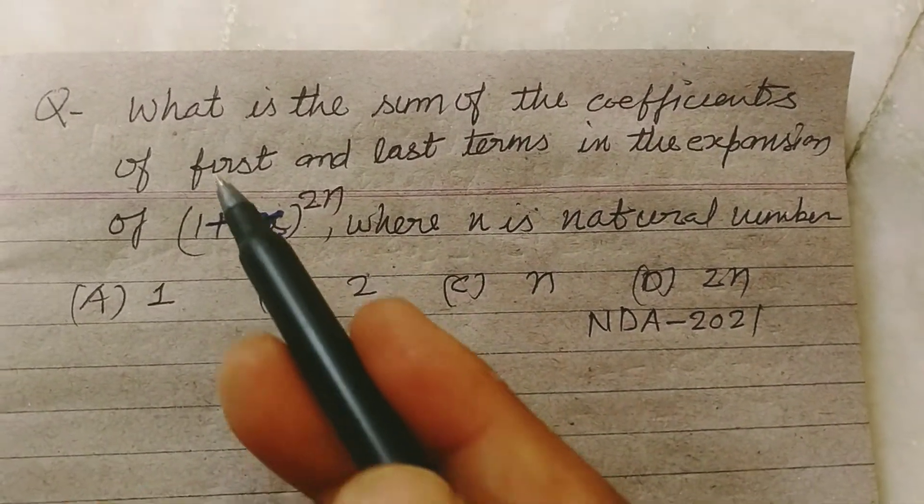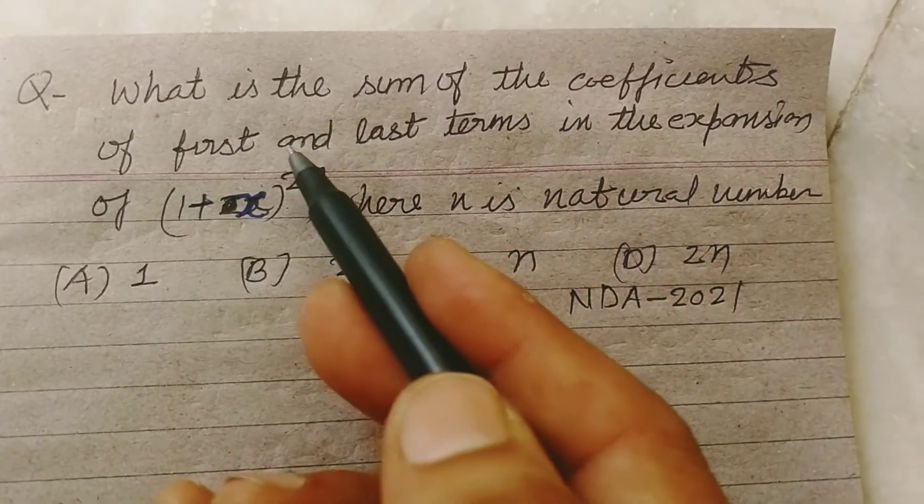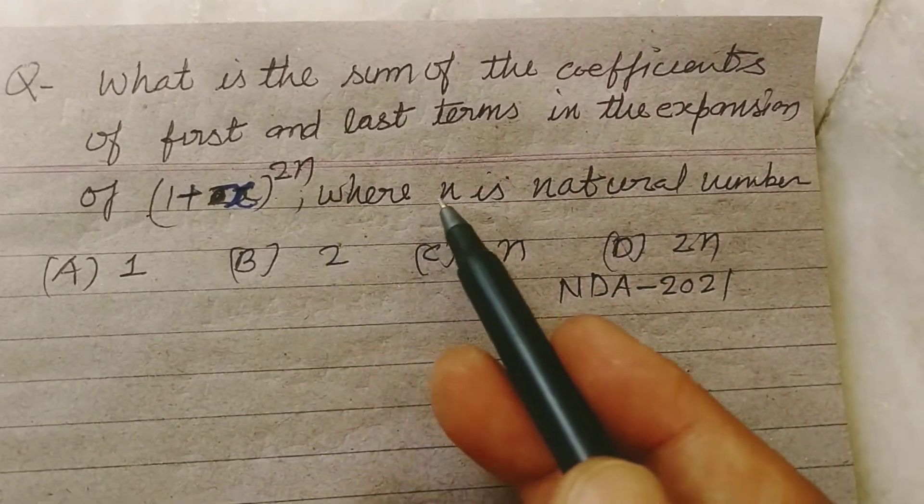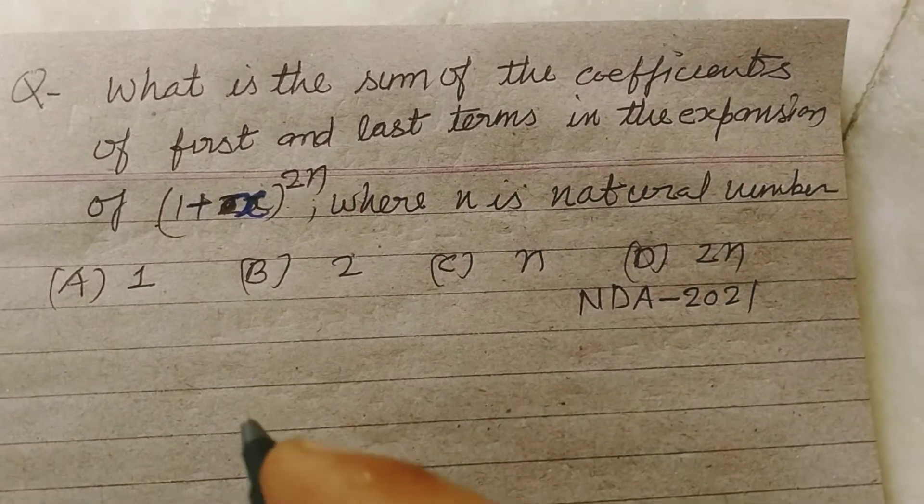The question is saying: what is the sum of the coefficients of first and last term in the expansion of 1 plus x to the power 2n, where n is a natural number?